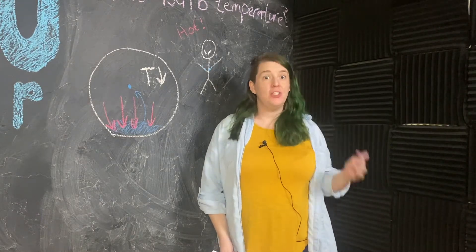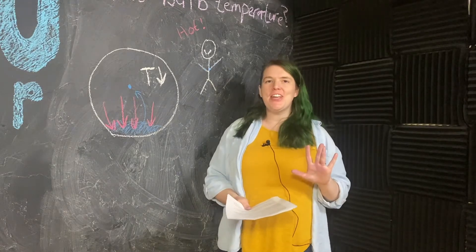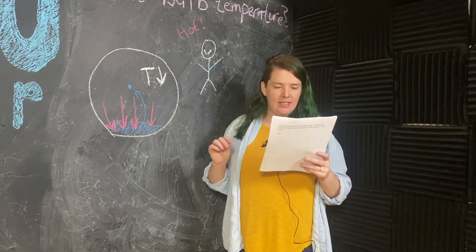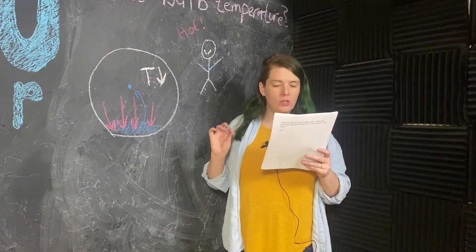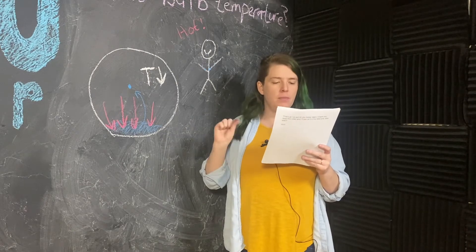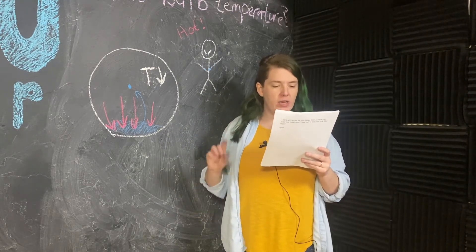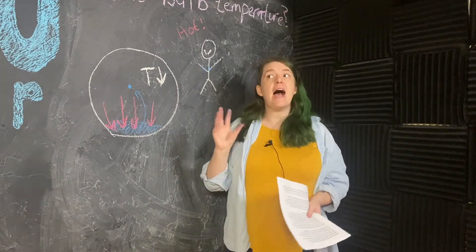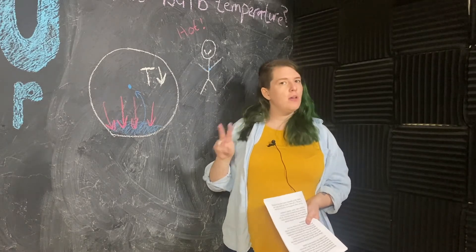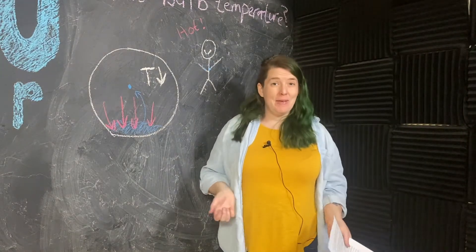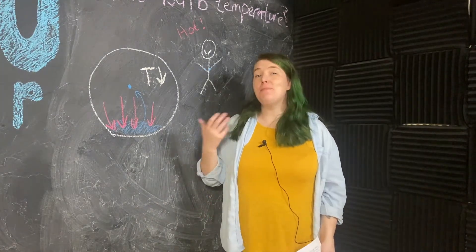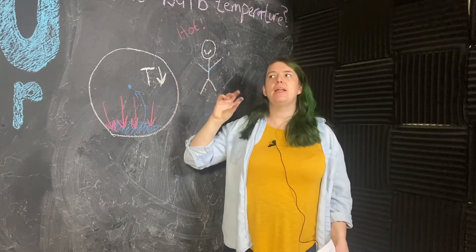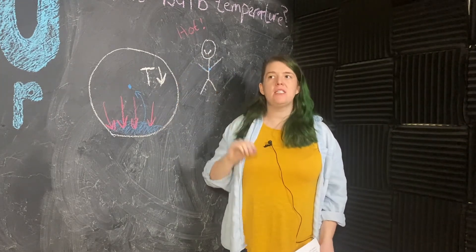Now let's talk about wet bulb potential temperature. I'm going to keep my script on me because the definition here gets very specific and I don't want to mess it up. Wet bulb potential temperature is the temperature of a parcel that is first cooled adiabatically to saturation and then brought to 1000 hectopascals by a moist adiabatic process. That's the definition. This is a term we're going to use in a couple of videos on the skew-T diagram, but I want to introduce you to this concept first. Fundamentally, what wet bulb potential temperature gets us is an abstract variable — a term that is constant with moist adiabatic processes.